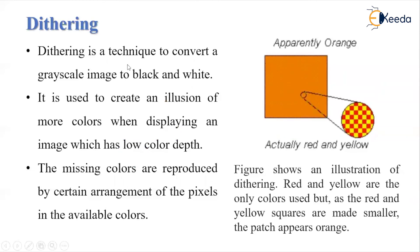The next topic is dithering. Dithering is a technique to convert a grayscale image to black and white. It is used to create the illusion of more colors when displaying an image which has a low color depth. The missing colors are reproduced by a certain arrangement of pixels in available colors. For example, we may apparently see orange color, but it is actually nothing but red and yellow. If we assign alternate colors — red, yellow, red, yellow — and see it as a continuous tone, we will see that it appears as orange. This process is called dithering.